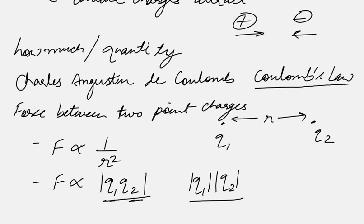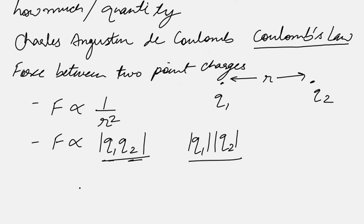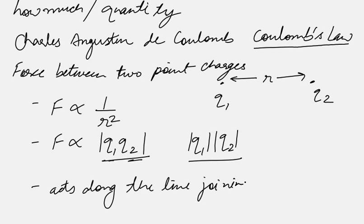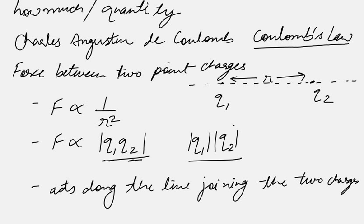So F is proportional to 1 over r squared, and F is proportional to |q1||q2|. The third statement in Coulomb's Law is regarding the direction of force: the force between the two charges acts along the line joining the two charges. These are the two charges q1 and q2, and whatever the force between them, it will act along this line.